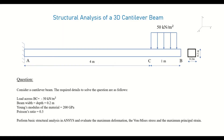Here we have a cantilever beam — this is the fixed end and this is the freely hanging end. We have a uniform load of magnitude 50 kilonewton per meter square acting downwards along a span of 1 meter. We have a rectangular cross section which is 0.2 meters by 0.2 meters.